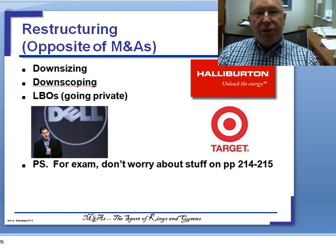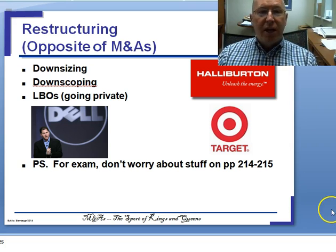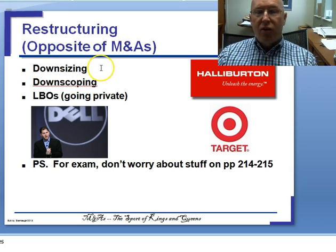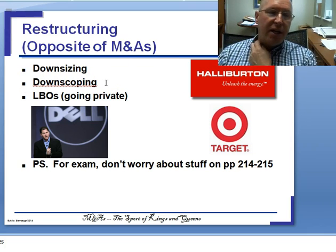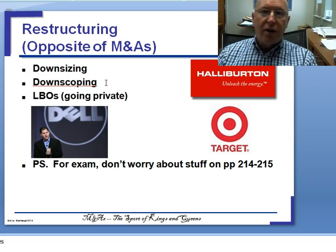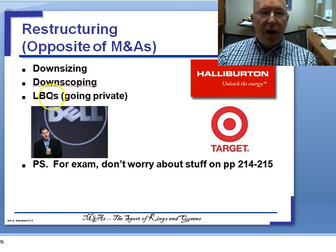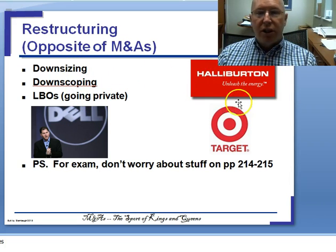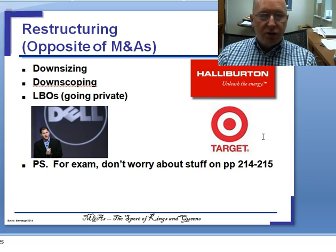We have the opposite of M&As, which is restructuring. Downsizing often goes with a consolidation M&A where you let people go. Downscoping is the opposite of an M&A — you're actually selling off parts of the business, whole product lines or whole divisions. Leveraged buyout opportunities are about going private — Dell was an example of an LBO. Halliburton and the energy downturn letting people go is downsizing; Target shedding its stores in Canada and closing the international division is downscoping.